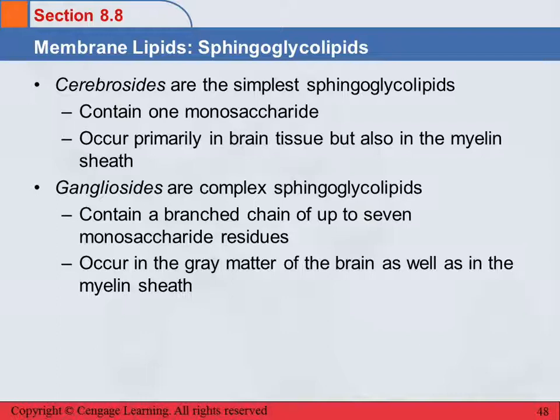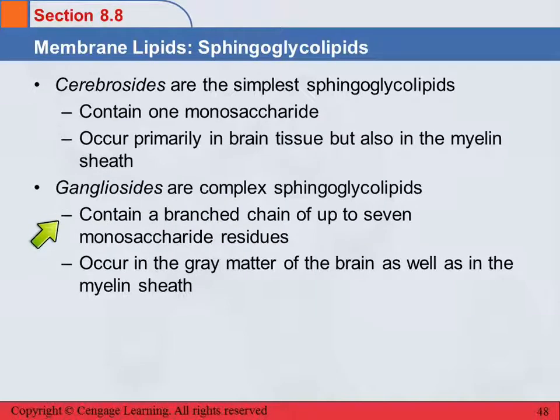Cerebrosides are the simplest group of sphingoglycolipids — they have one monosaccharide. These primarily occur in brain tissue (cerebro refers to your brain) but also occur in the myelin sheath over the nerves. Another group called gangliosides are more complex sphingoglycolipids with branched-chain carbohydrates of up to 7 monosaccharide residues. These are also found in the brain, specifically in the gray matter, and also in the myelin sheath.